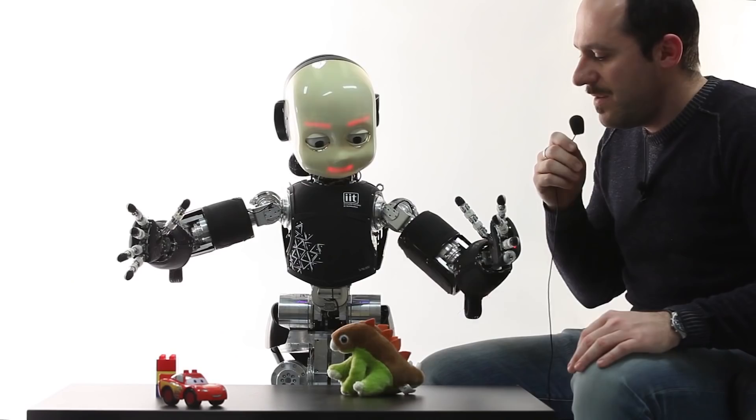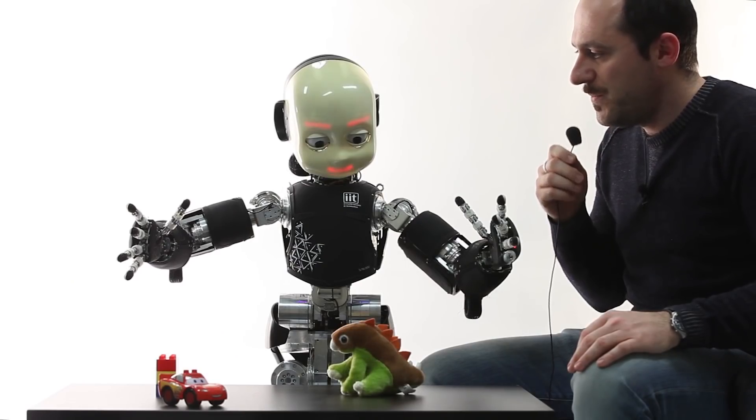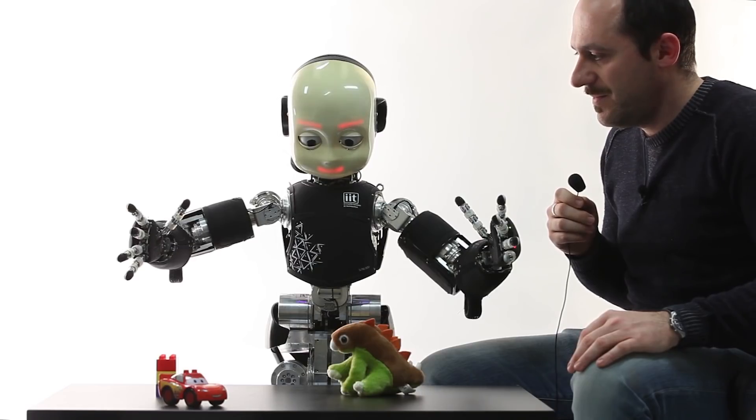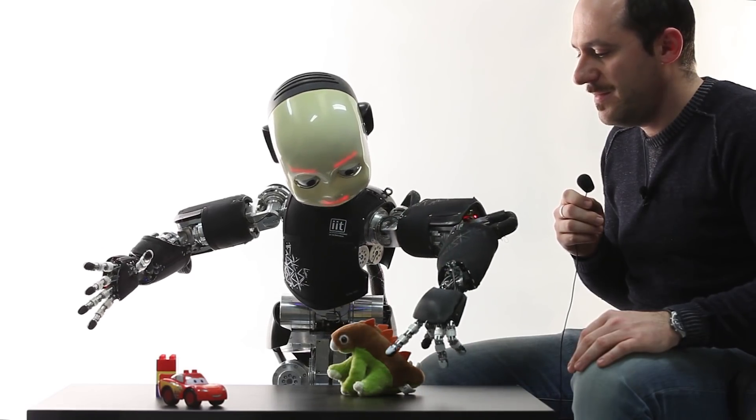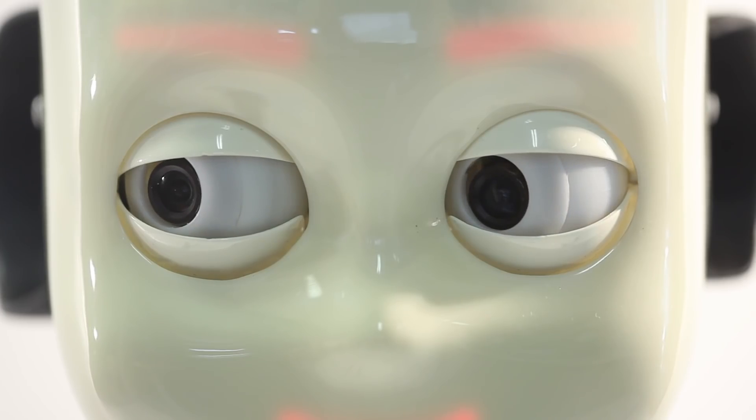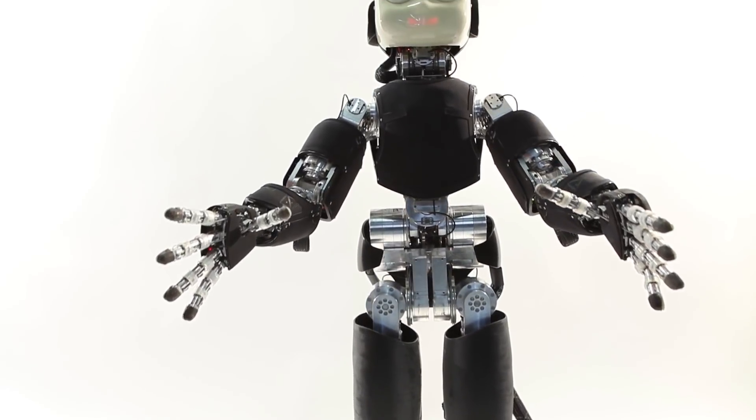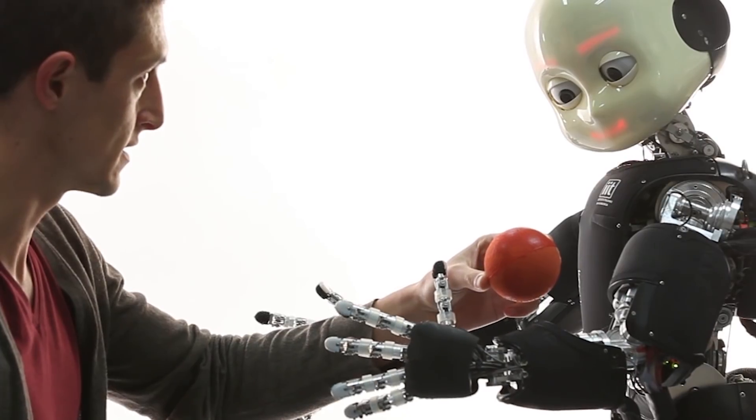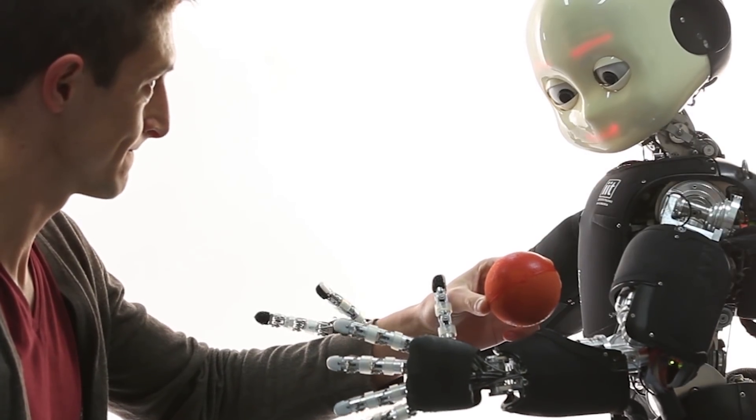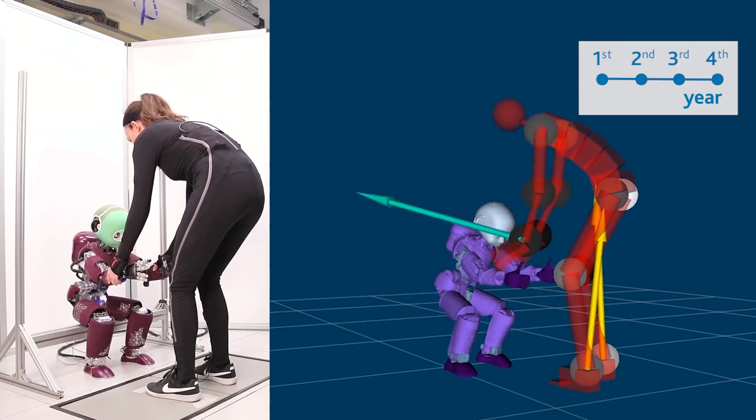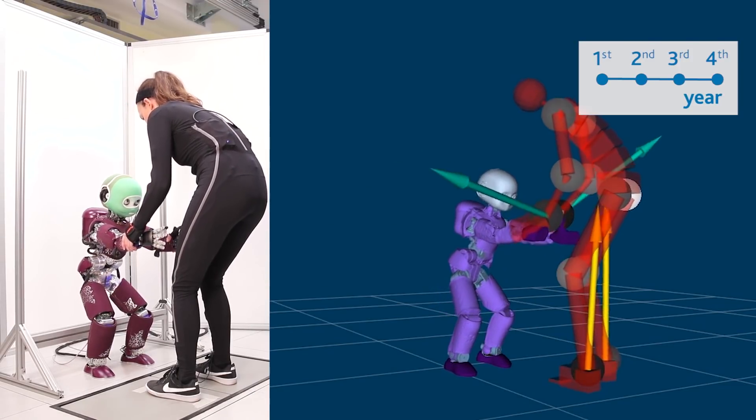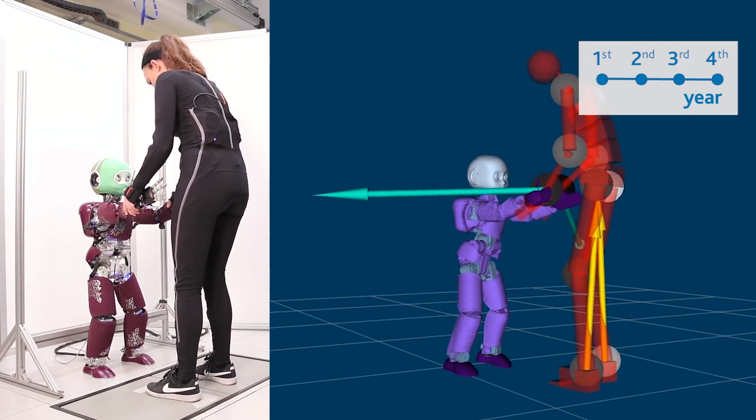But one of iCub's most valuable lessons for the field of robotics is in sociability. Researchers are training the robot to maintain eye contact with humans, determine their emotions through facial expressions and gestures, and respond to nonverbal communication in order to complete tasks. This kind of research could mark the beginning of a new era in human-robot interactions.